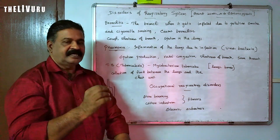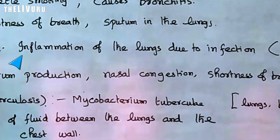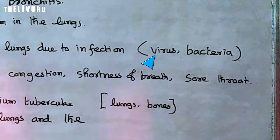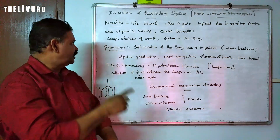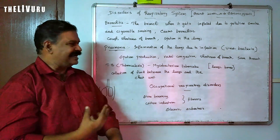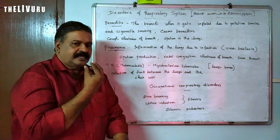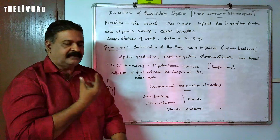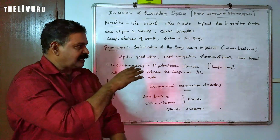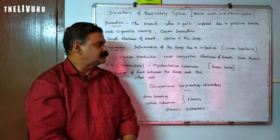Pneumonia is defined as inflammation of the lungs due to infection. The immune system is affected by the infection. Pneumonia means inflammation of the lungs due to infection.